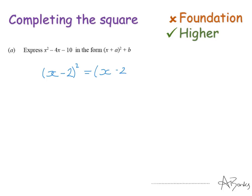I'm going to expand this out to see what this gives me. Once you get pretty confident at these, you'll be able to skip this step out and you'll just be able to tell what you get when you expand it. So I get minus 2x minus 2x, and on the end I get a positive 4 because it's minus 2 times minus 2.